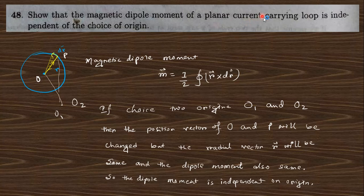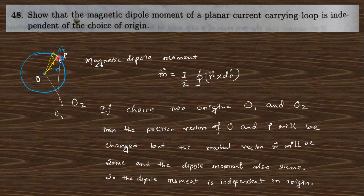Question 48: Show that the magnetic dipole moment of a planar current-carrying loop is independent of the choice of origin. The magnetic dipole moment is (i/2)∮r × dr. The quantity r × dr represents the area element, which does not change when a different origin is chosen — although the position vectors change, the area vector remains the same. Therefore the integral value, and hence the dipole moment, is the same regardless of the chosen origin. This is analogous to the case of the electric dipole moment.